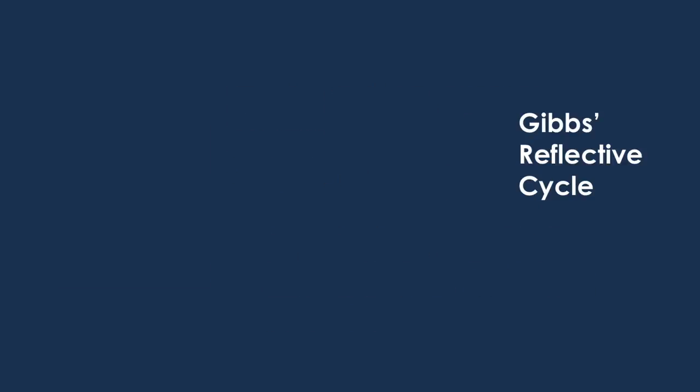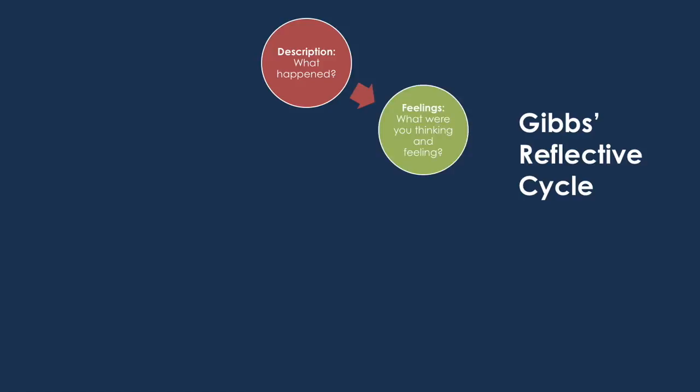Gibbs' reflective learning cycle has six steps. Step 1: Describe the event — what happened? Step 2: Consider your feelings — what were you thinking and feeling during this experience?